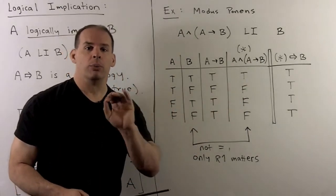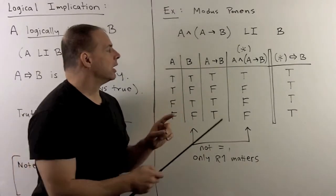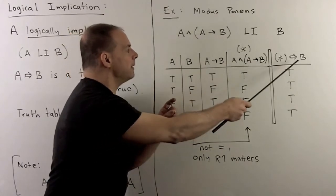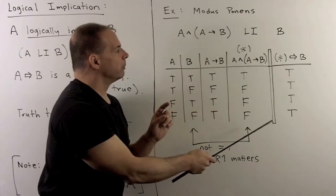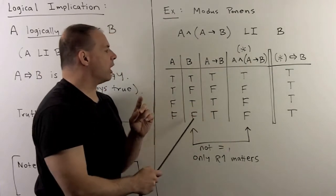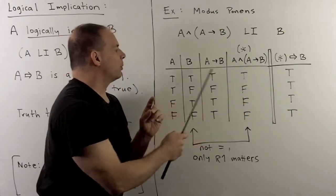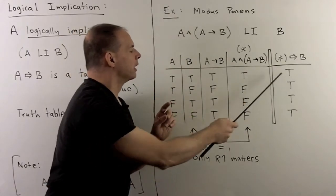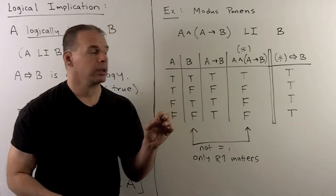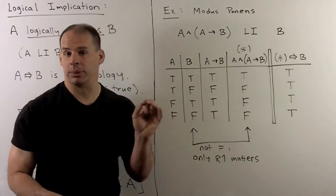We can do more work and show the tautology directly. We want to show that the statement (A and (A implies B)) implies B is always true. We check: true implies true is true, and false implies anything is always true. So we get a tautology, again confirming logical implication.